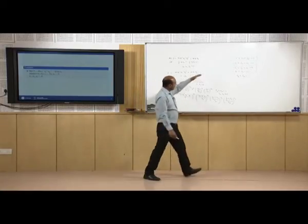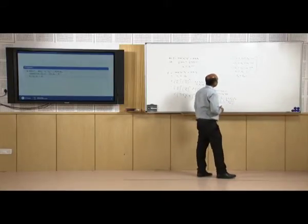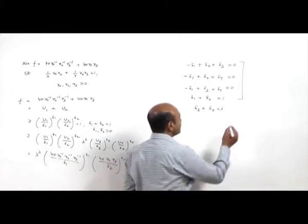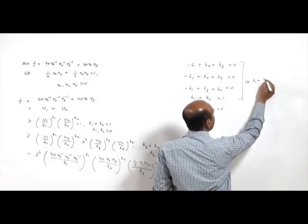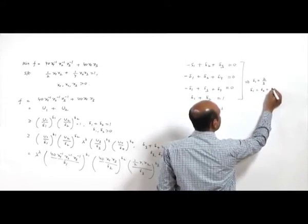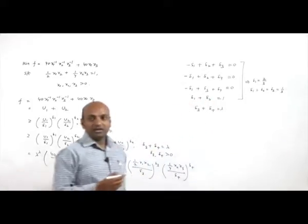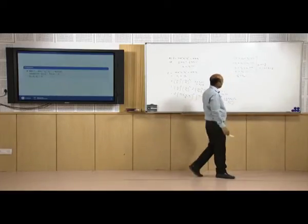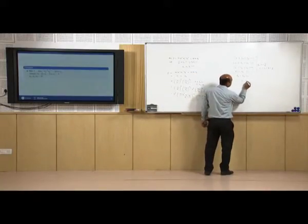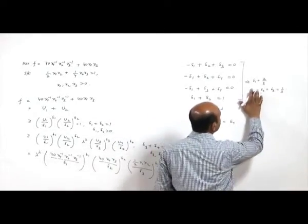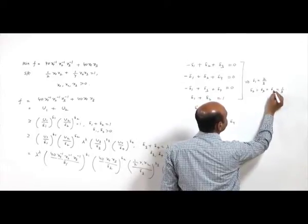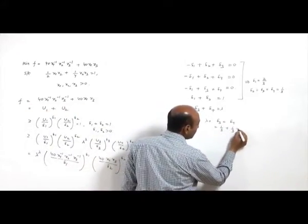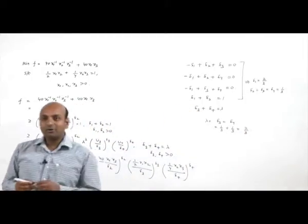Solving this system, we obtain delta_1 = 2/3, delta_2 = 1/3, delta_3 = 1/3, delta_4 = 1/3. You can verify these values satisfy all the equations. Therefore lambda = delta_3 + delta_4 = 1/3 + 1/3 = 2/3.